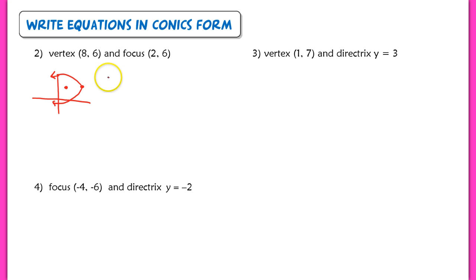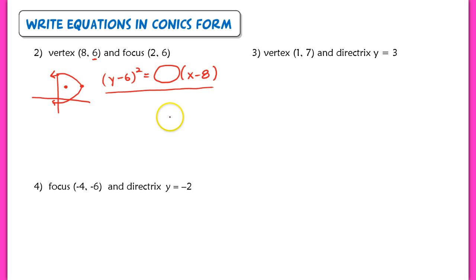So now that tells us that in the general form, we have y minus the y value here, which is 6, squared, equaling some value, which we don't know quite yet, multiplied by x minus 8. So this would fit the general form so far, using the vertex that it's given, and the fact that it's opening to the left. Now to figure out what value we'll put out in front of that linear term, remember this relates back to your p-value.